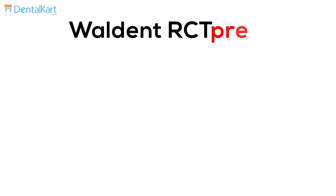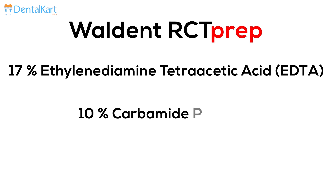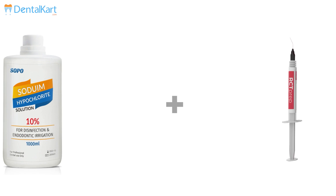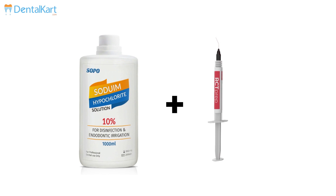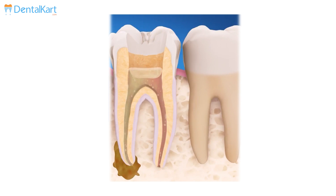Valdent RCT prep contains 17% Ethylenediamine tetraacetic acid and 10% carbamide peroxide in a water soluble base. It creates an effervescent effect with sodium hypochlorite. This combination promotes bleaching of the internal surfaces. Carbamide peroxide releases oxygen and further enhances the bleaching process.